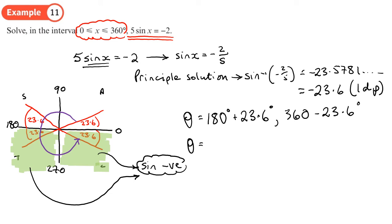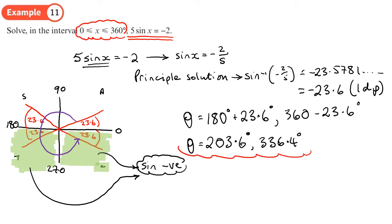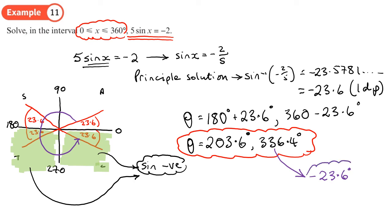My first solution was negative 23.6, but the answers need to be between 0 and 360. So we convert: negative 23.6 is the same as 360 minus 23.6. So the two solutions are 180 plus 23.6 equals 203.6 degrees, and 360 minus 23.6 equals 336.4 degrees. In this case, the principal solution wasn't in the required range, so we used the CAST diagram to convert it to its positive equivalent.